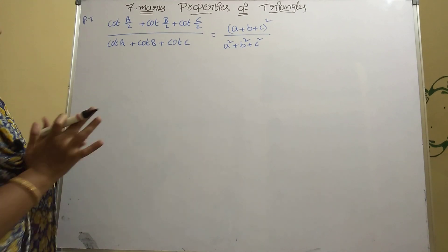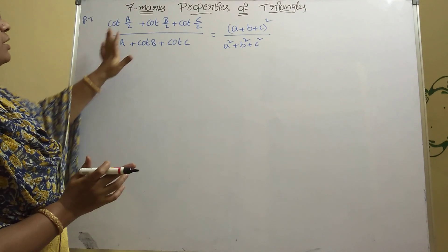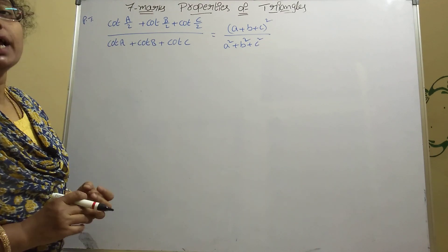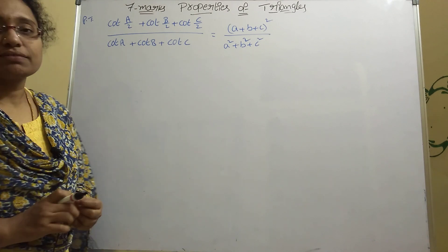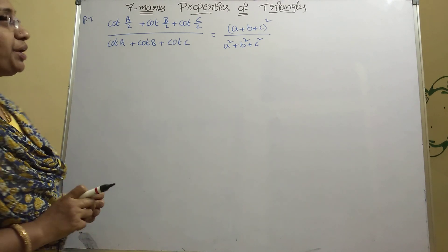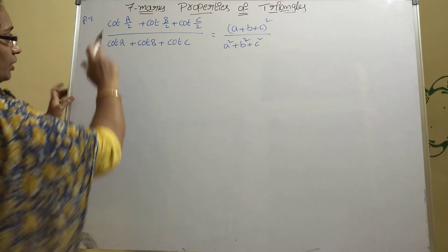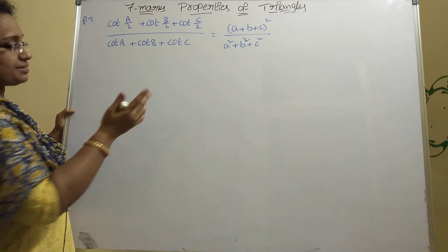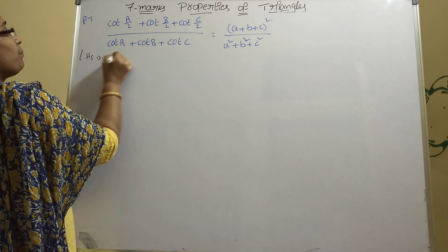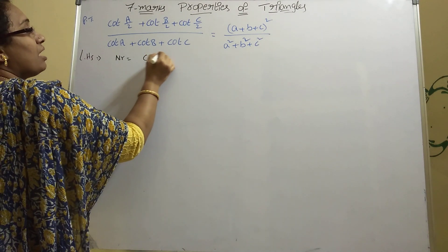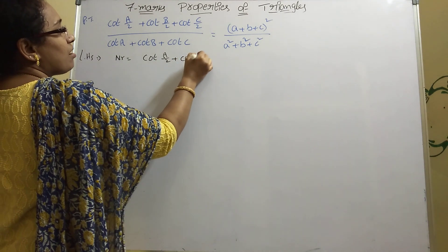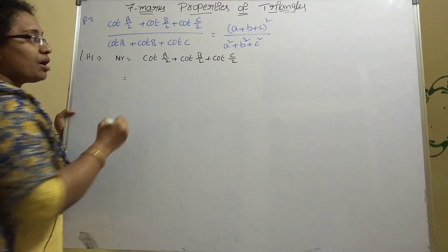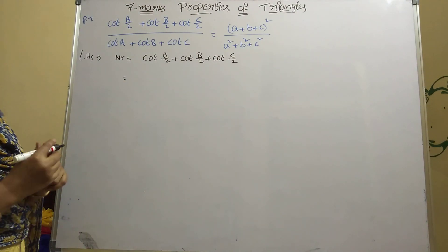Next, problem two: prove that (cotA/2 + cotB/2 + cotC/2) ÷ (cotA + cotB + cotC) = (a+b+c)² ÷ (a²+b²+c²). We take the numerator and denominator separately. The numerator is cotA/2 + cotB/2 + cotC/2.